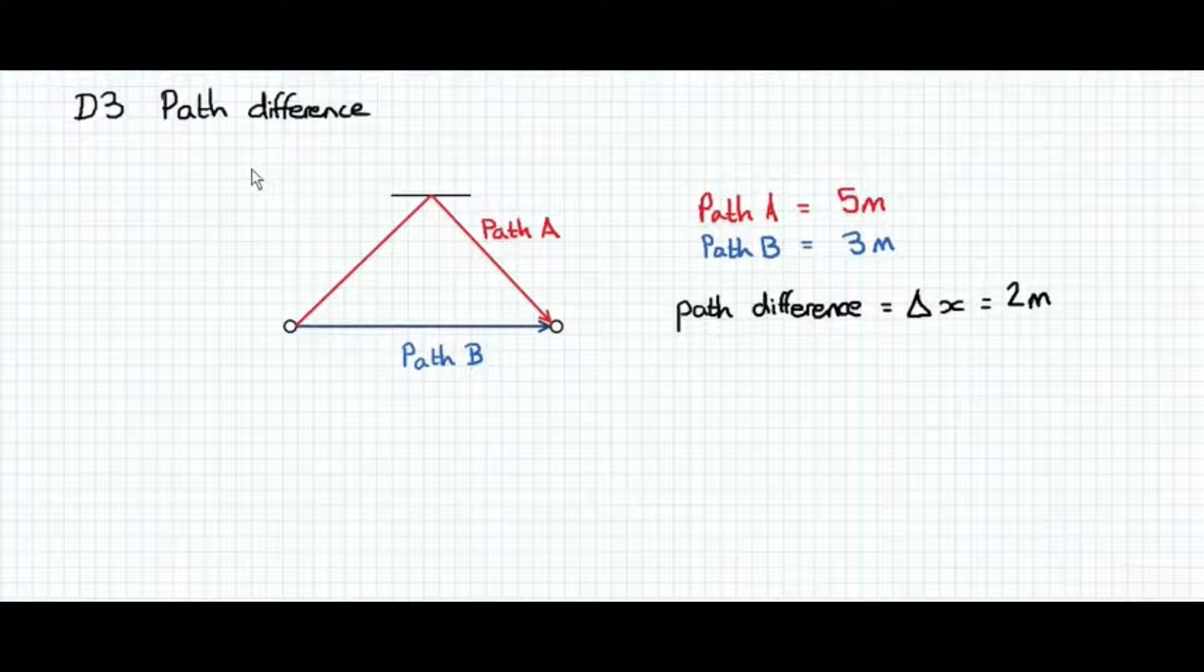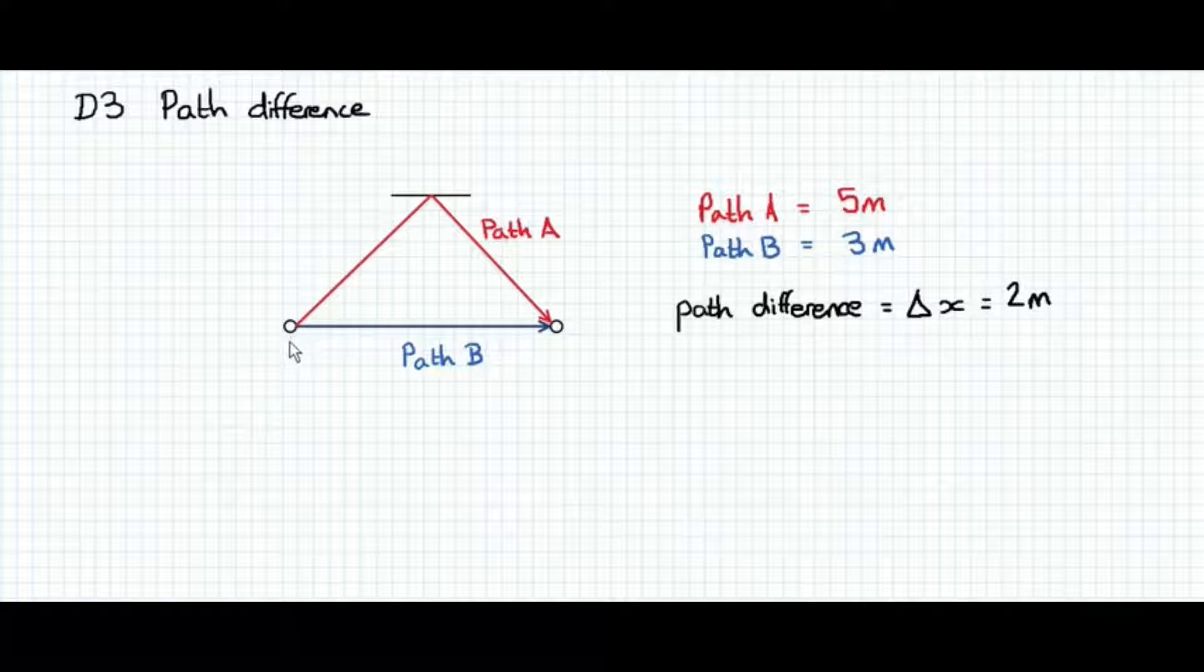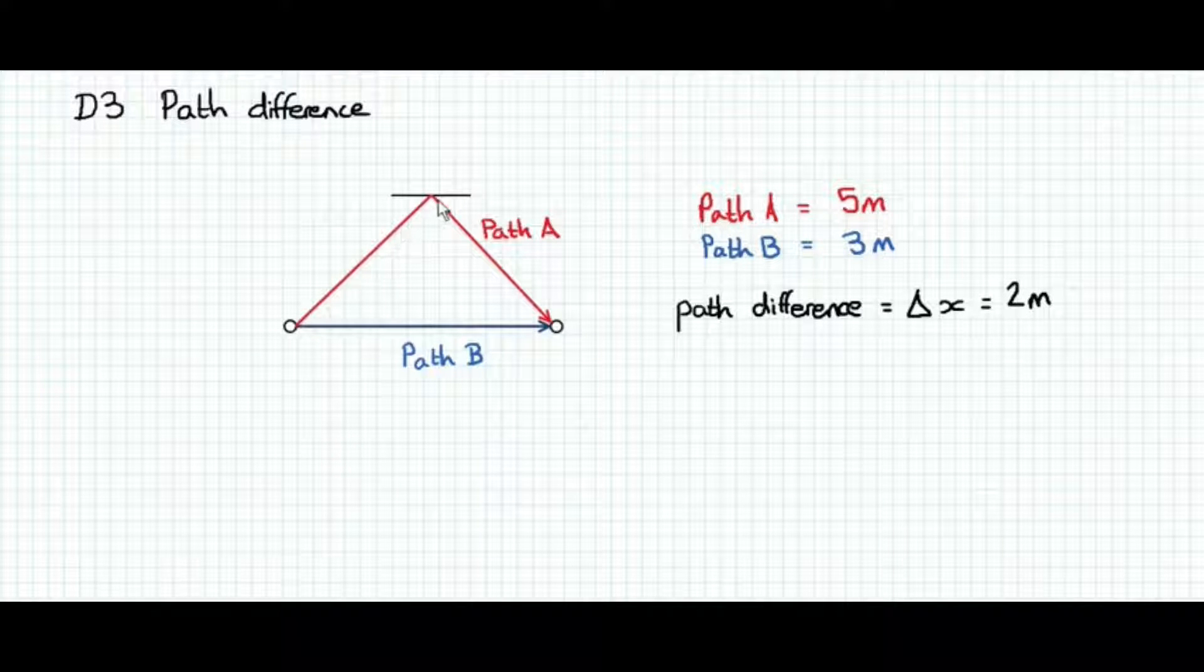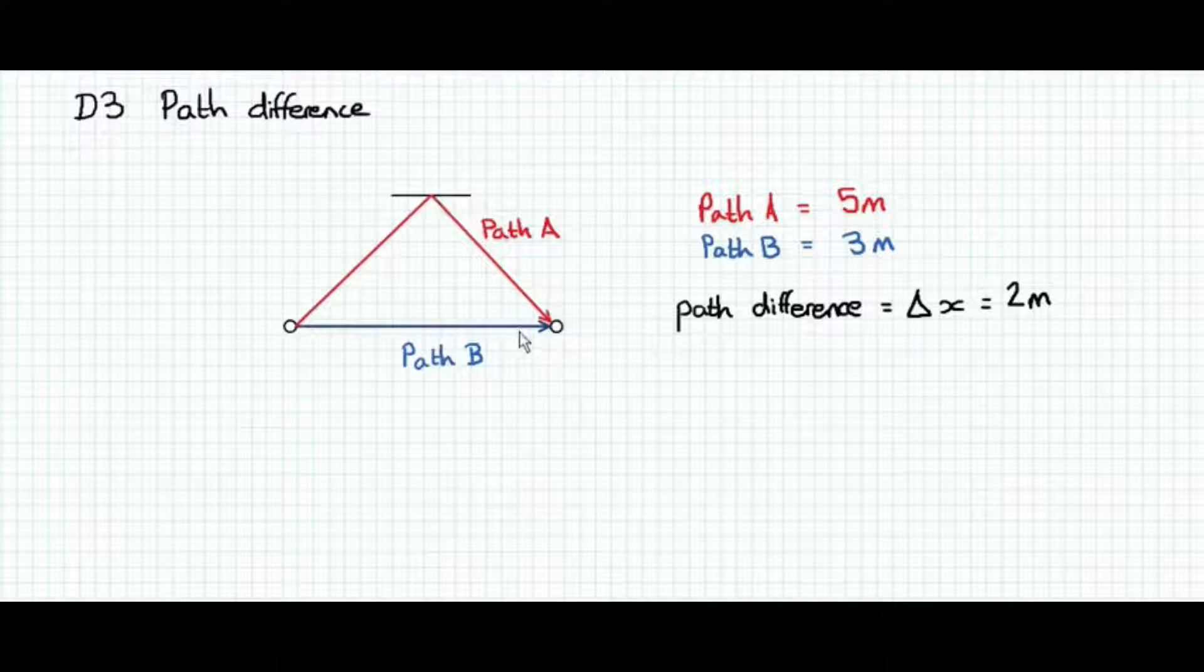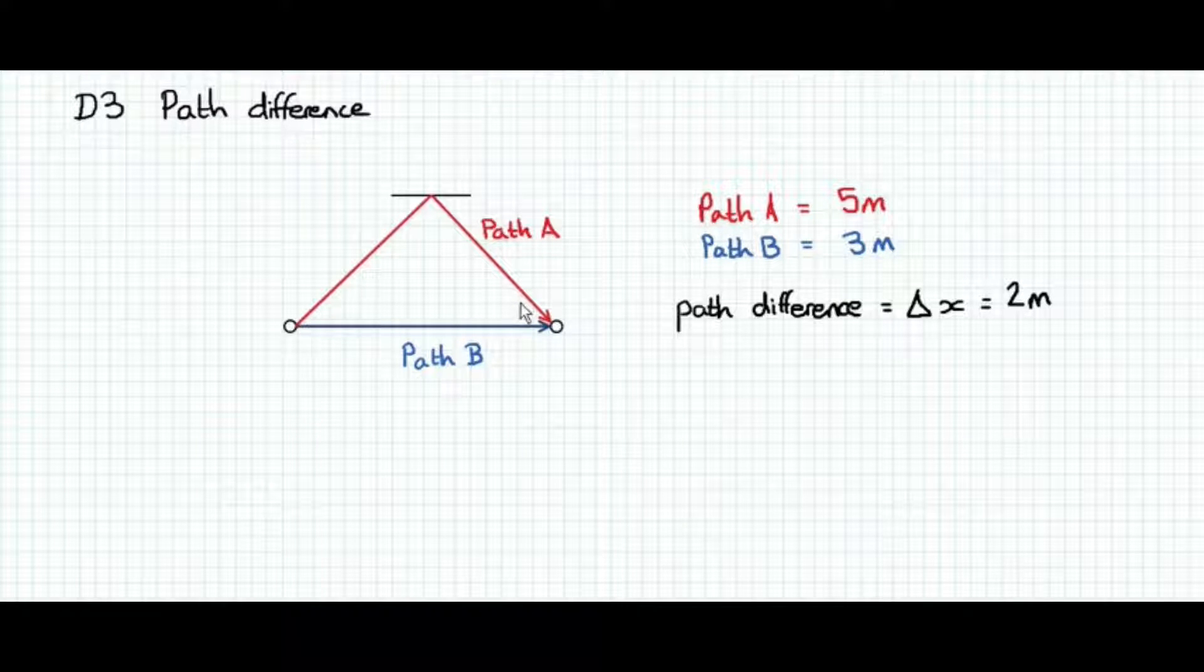Path difference. If we have light or a radio signal traveling from a position here indicated on the left to here, a position indicated on the right, it can take more than one path. And if we consider two possible paths labelled here path A, which is via some reflector, and path B, it can be easily seen that path A is longer than path B.